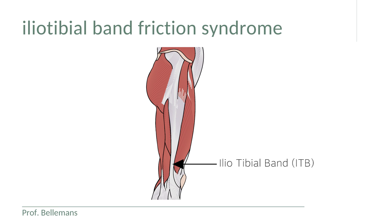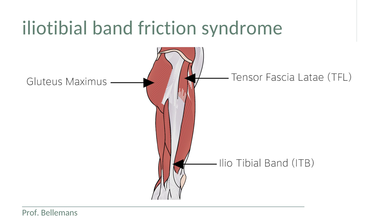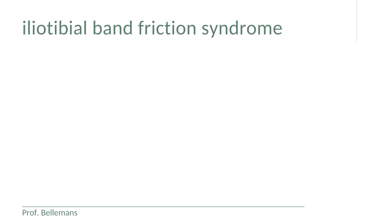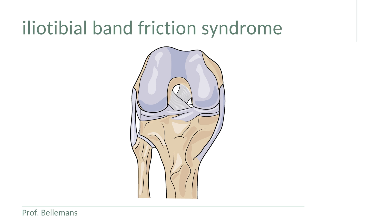The iliotibial tract is connected to a small muscle called the tensor fascia lata, but it also has connections with the gluteus maximus and the lateral side of the quadriceps, which is the vastus lateralis. Each of these muscular structures can tension the ITB, and that is important because the more tense your ITB is, the more likely you are to get a rubbing effect over the lateral side of the knee.